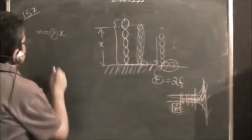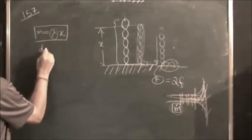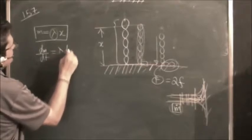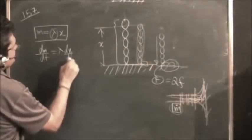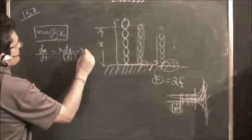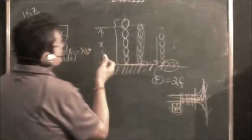Once we know this equation, we can know dm/dt would be equal to lambda (λ) dx/dt. This is nothing but velocity, so it is lambda v (λv). V is the velocity at any instant where this distance is X.